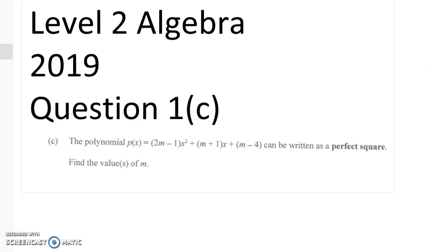So this is question 1c, and we're given a polynomial — p of x is equal to all of this. We can see that it's a quadratic, and we're told it can be written as a perfect square, and we have to find the value of m.